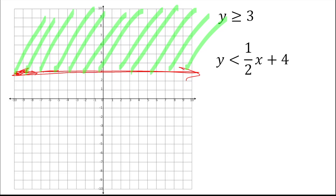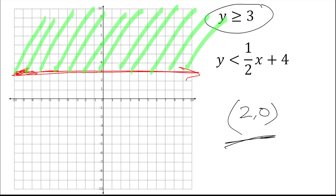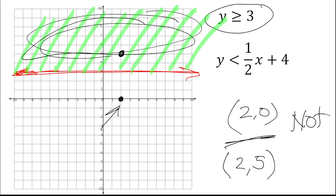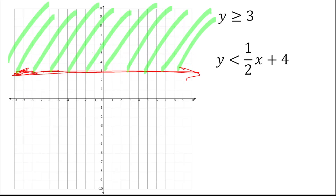They might ask: is a point a solution to the inequality? For example, is (2, 0) a solution? Looking at the graph, that point is not part of the shaded area, so it's not a solution. But if they ask about (2, 5), we go to x=2, y=5 — that point lies in the shaded area, so it would be a solution.